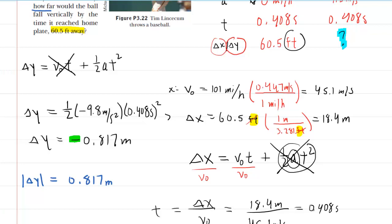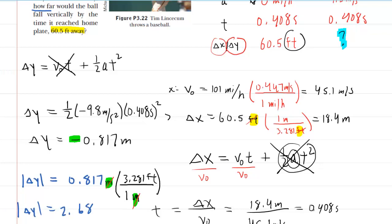If the homework system requires converting back into feet, we recall that one meter equals 3.281 feet. Arranging the conversion so meters cancel, we multiply 0.817 by 3.281 and get approximately 2.68 feet. So the ball falls vertically about 2.68 feet, which is the correct answer to the question.